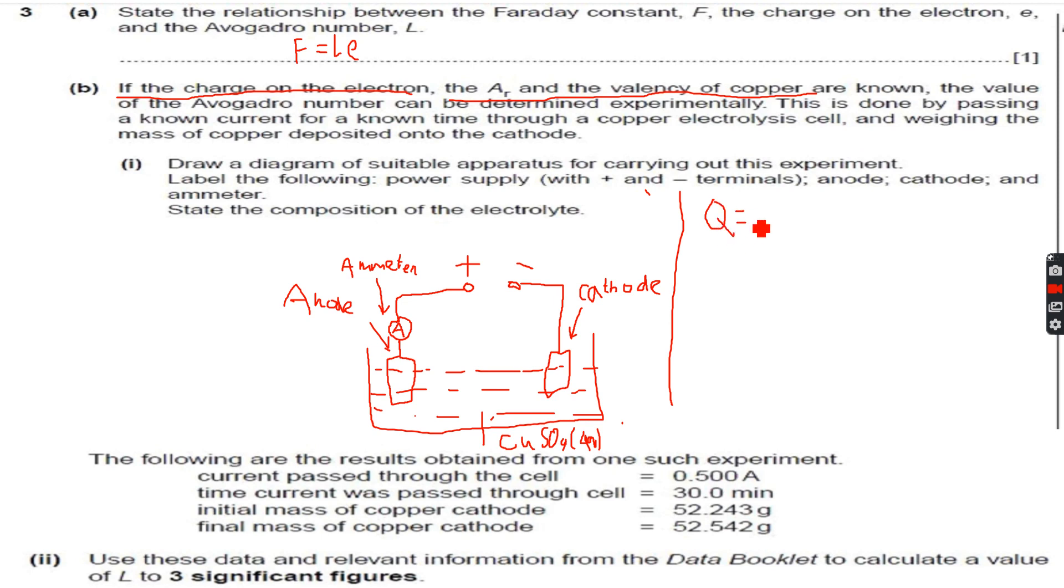Let's first start with Q. We can calculate Q by Q equals It, which is 0.5 into 30. It's in minutes, so to convert it into seconds we multiply by 60. So this becomes, when I do it on my calculator, 900 coulombs.